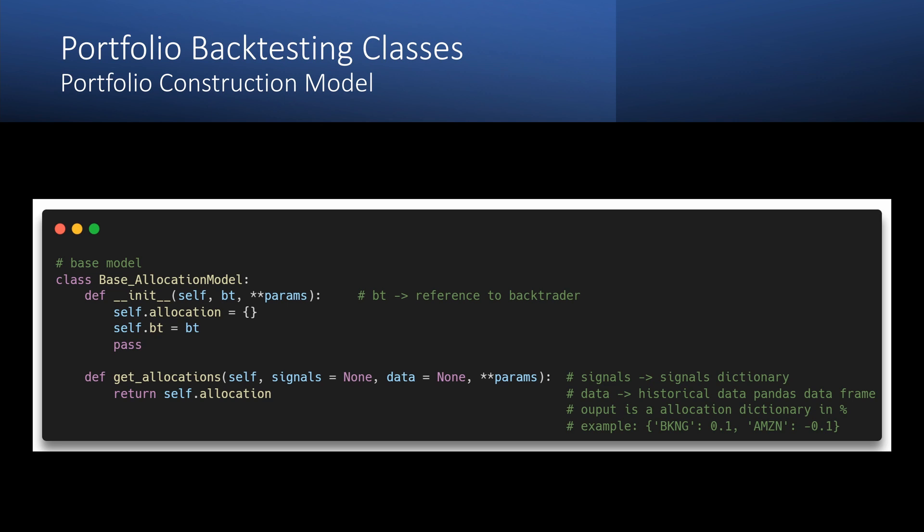We pass this information to the portfolio construction model as input and then the model generates a dictionary which contains allocation weights of our assets. Again, the key is an asset ticker and the value is a weight.